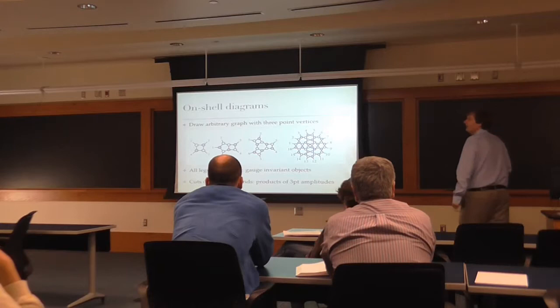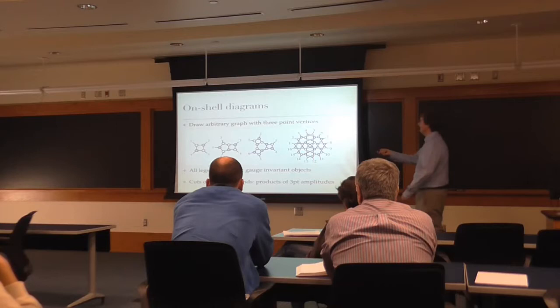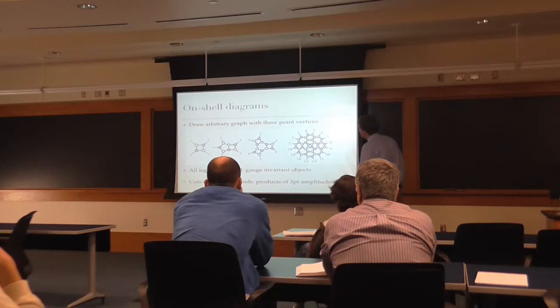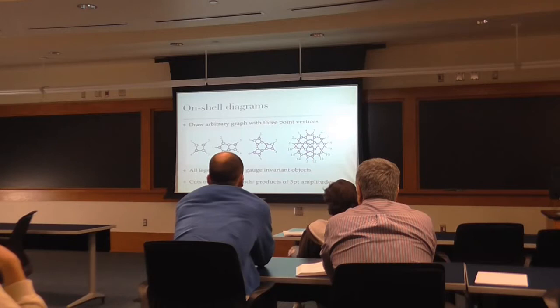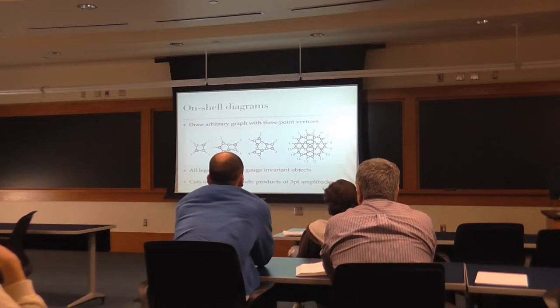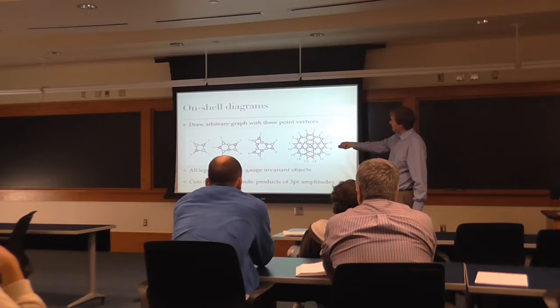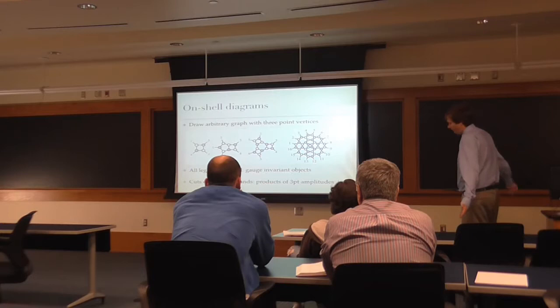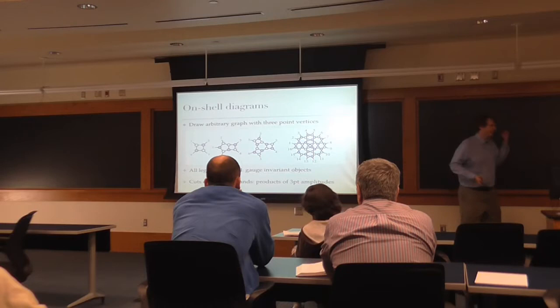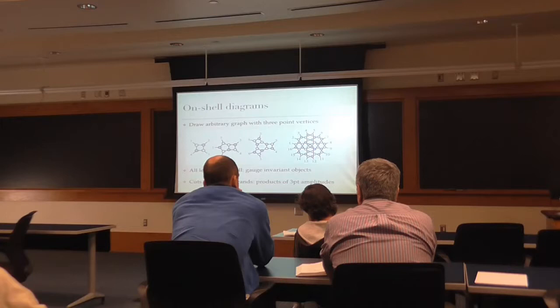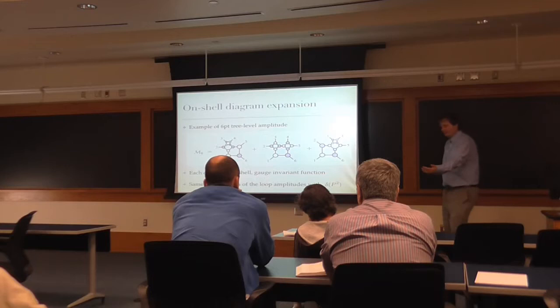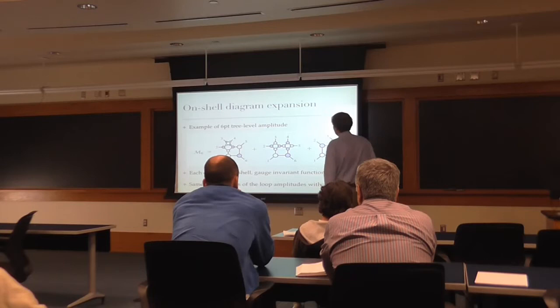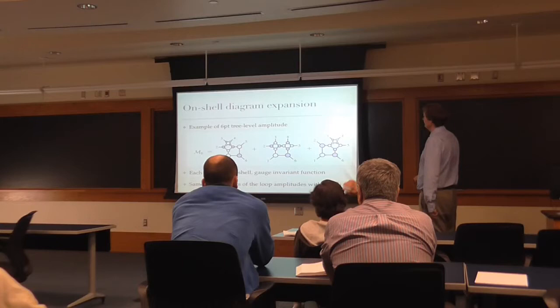I can draw these on-shell diagrams by sticking three-point amplitudes together. These diagrams are products of three-point amplitudes as building blocks. The meaning of these objects is that they are cuts of loops — for example, this is a cut of the four-point one-loop amplitude, where I set four propagators on-shell. All legs, both internal and external, are on-shell. That's why they are gauge-invariant objects. And now I can use the recursion relations to build amplitudes from these building blocks. Here, for example, a six-point tree amplitude is the sum of three such objects.